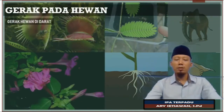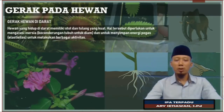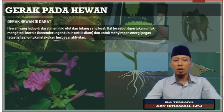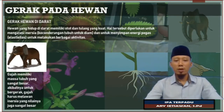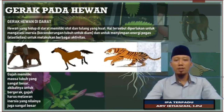Selanjutnya ada yang namanya hewan yang bergerak di darat. Hewan yang bergerak di darat ini memiliki otot dan tulang yang sangat kuat, sehingga diperlukan untuk mengatasi inersia. Kalau kita ingat kembali, inersia ini adalah hukum 1 Newton, di mana kecenderungan tubuh untuk mempertahankan dalam keadaan diam. Dan juga menyimpan energi pegas atau elastisitas untuk melakukan berbagai aktivitas. Misalkan hewan gajah, kemudian juga kuda dan harimau yang berlari dengan cepat.